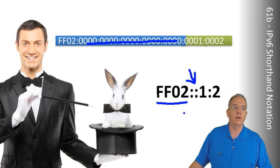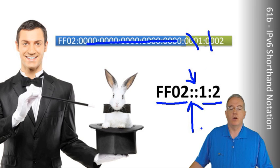And by looking at this, it says, okay, that first block is FF02. Then the last two blocks are 1 and 2 because we can also get rid of these zeros here. But if you'll notice, everything in between is all zeros.